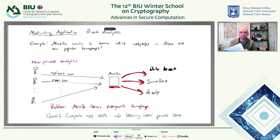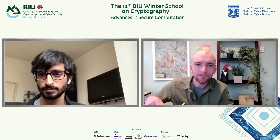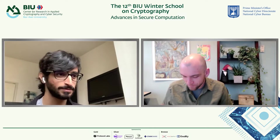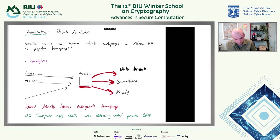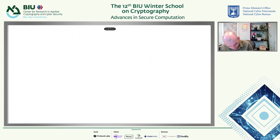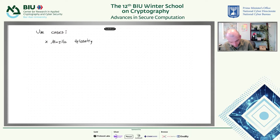If you think about the function Mozilla is trying to compute, they don't actually need to learn Alice or Bob's homepage to compute the statistic. Maybe with a more clever protocol we could do this without this privacy failure. This is just one use case. Let me mention some of the use cases for these kinds of tools. Mozilla is interested in browser telemetry data — this is actually a pilot program using the tools I'll describe, in use today.